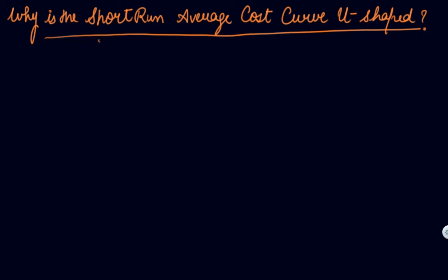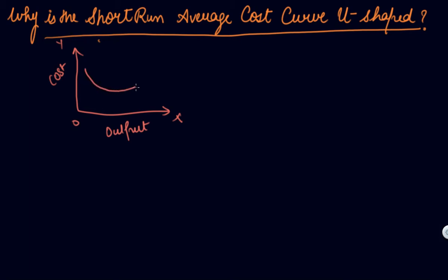This is the most frequently asked question in CVSE board exams: why are short-run average cost curves U-shaped? Here is the graph — cost on the vertical axis, output on the horizontal axis. Your average variable cost is U-shaped, average fixed cost is a rectangular hyperbola, and average total cost is also U-shaped. So both average total and average variable costs are U-shaped curves in the short run.